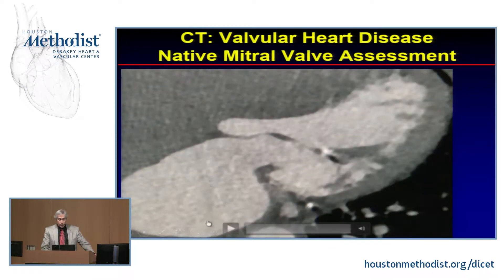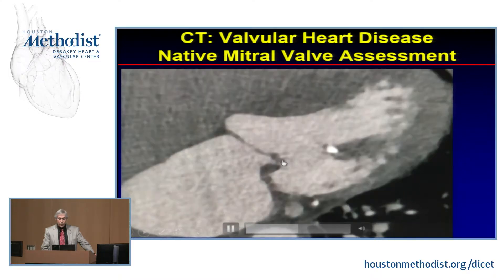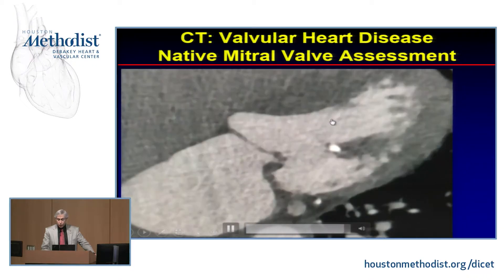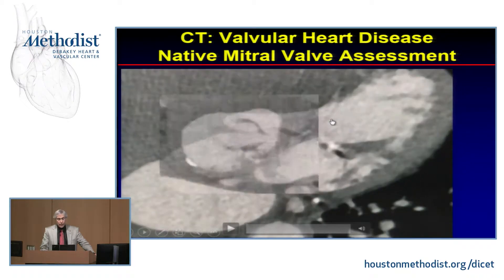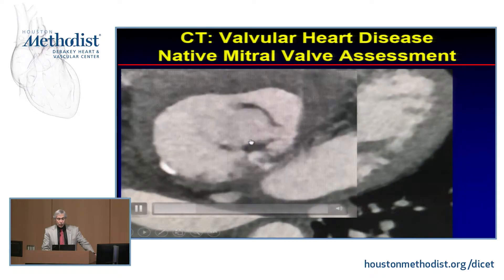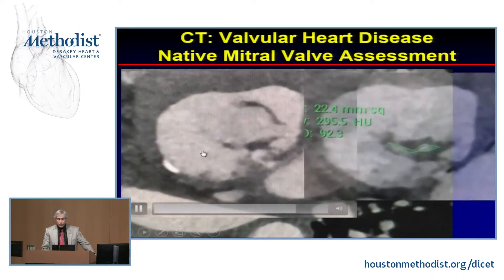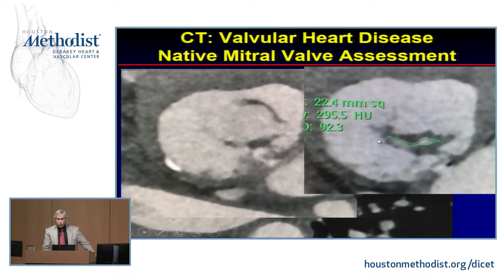On the other hand, this patient had significant mitral regurgitation. You can see poor coaptation of the leaflets, calcium of the papillary muscles, and thinning of the posterior wall. In the short axis cut, you can see poor coaptation of the anterior and posterior leaflets. This can be planimetered — this was moderate MR by planimetry.